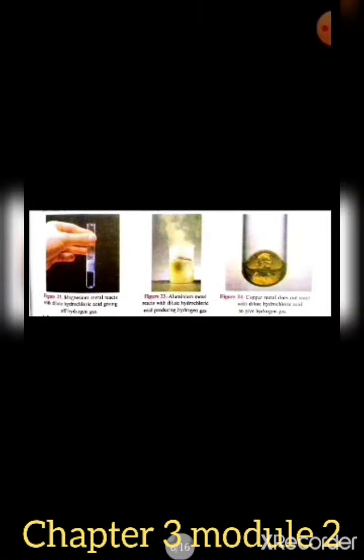Some pictures of reactions are shown here. In the first figure, magnesium metal reacts with dilute HCl giving off hydrogen gas. In the second figure, aluminium metal reacts with dilute HCl to form hydrogen gas. In the third figure, copper metal does not react with dilute HCl and no hydrogen gas is produced.